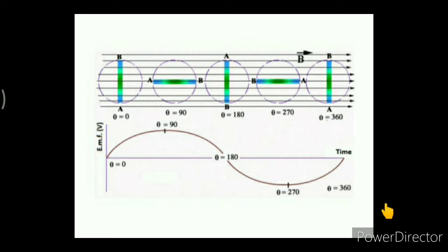There are a number of ways to increase the EMF in the AC generator. First, by decreasing the distance between the magnets and the coil, we increase the magnetic field strength experienced by the coil. Second, by using a stronger magnet. Third, by increasing the frequency of rotation. Fourth, the EMF can be increased by increasing the number of turns in the coil — if we double the turns, we get double the maximum EMF.